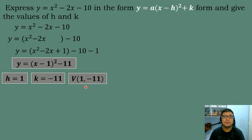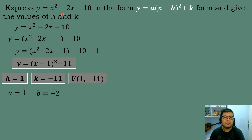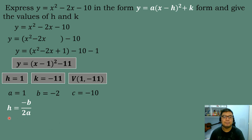Another method to solve for the vertex of the parabola or quadratic equation is to use a formula. First, we identify the numerical coefficients: the coefficient of x² is a = 1, the coefficient of the linear term is b = −2, and the constant term is c = −10. Then, using the formula h = −b / 2a.